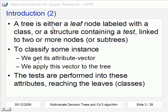A tree is either a leaf when the node is labeled with a class, or can be a structure containing a test that is linked to two or more nodes that we call subtrees. When we want to classify some instance, we have to get its attribute vector and apply this vector to the tree. We reach one of the leaves that will be the class to which this new instance belongs.